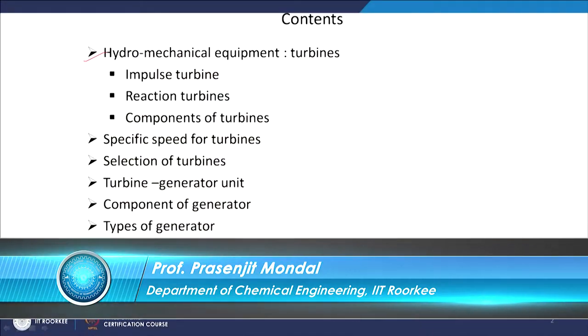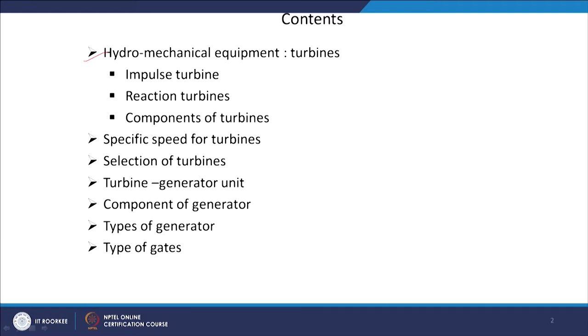Hi friends. Now we will discuss the second part of hydro energy, concentrating on hydromechanical equipment — that is turbines — and different types of turbines: impulse turbine, reaction turbine, and components of these turbines. Then specific speed for turbines, selection of turbines, turbine generator unit, components of the generator, types of generators, and types of gates.